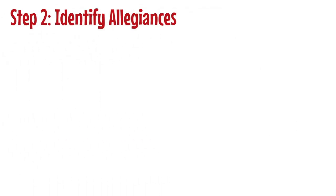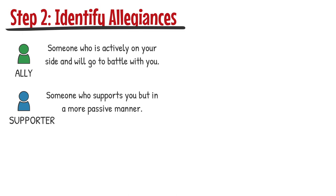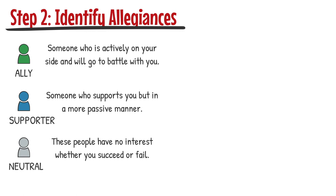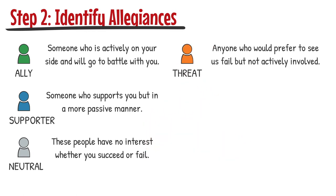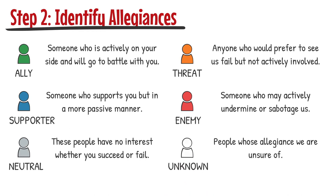Step two is to identify the allegiances. We might colour in green anyone who we consider an ally — someone actively on our side who might go to battle with us metaphorically. Blue is for those who support us in a less proactive, more passive manner. Grey is for those with no interest in whether we succeed or not. Orange labels threats — those who would rather we failed. Red labels enemies — anyone who may actively seek to undermine, sabotage, or otherwise challenge our aims. Unknowns are left as white for now.